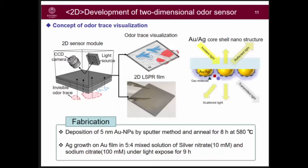Now let's go to the two-dimensional sensor part. This is the concept of odor trace visualization. Here is the sensor film and the CCD camera and light source. The 2D sensor film is slightly different from the 1D one — we grow a silver layer on top of the gold layer. With the 1D sensor we use just transmitted light, but with the 2D one we can use both reflected light and scattered light.